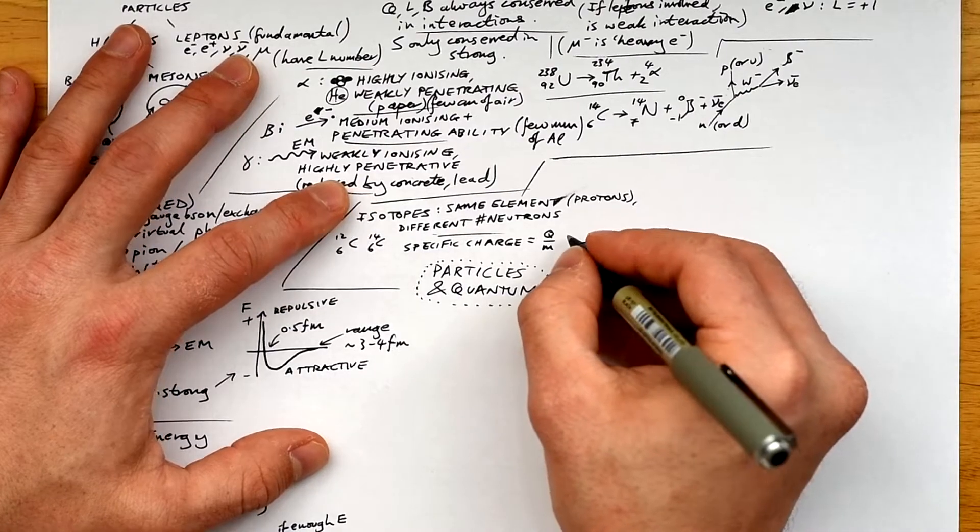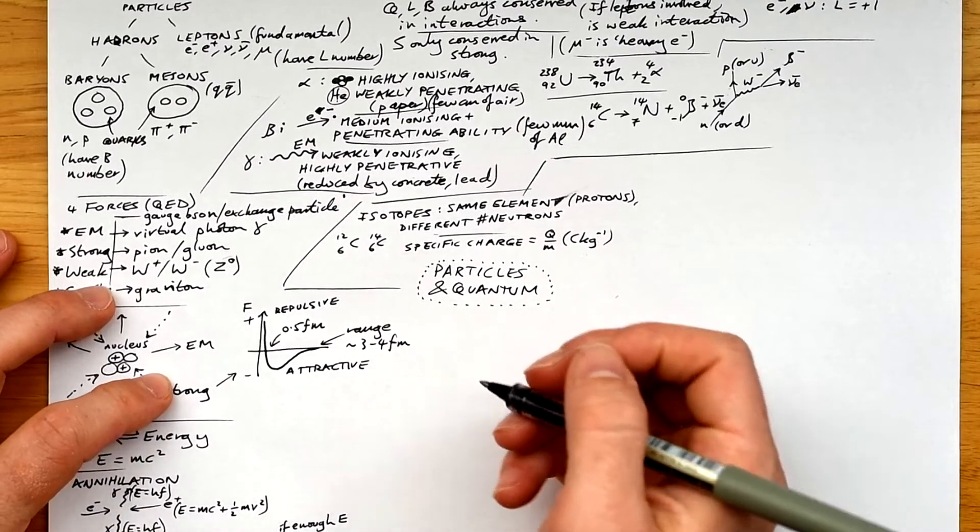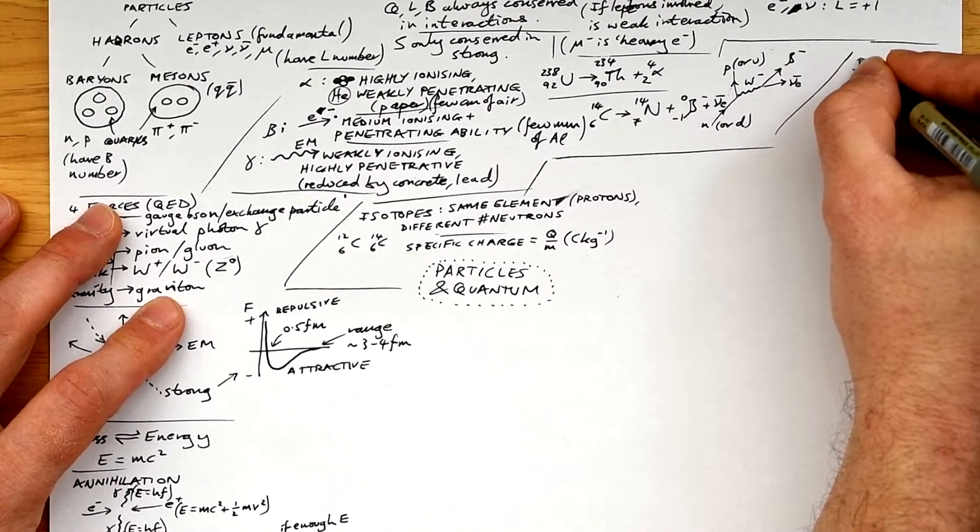Specific charge is the charge-to-mass ratio. So we calculate it by doing charge divided by mass. So the unit is coulombs per kilogram, generally a very big number, because the masses of these particles are tiny.